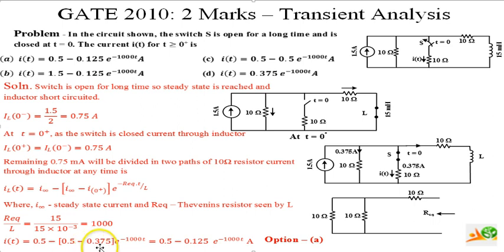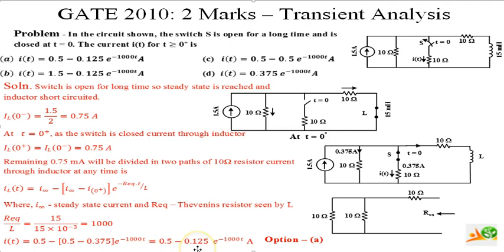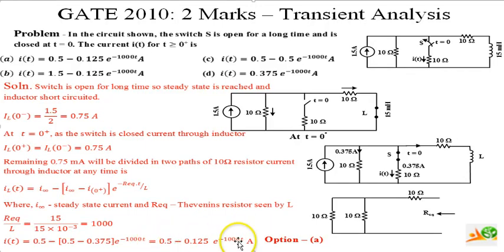The current flowing in the i(t) branch is given by 0.5 minus (0.5 minus 0.375) times e to the power of minus 1000t, which equals 0.5 minus 0.125 times e to the power of minus 1000t. Therefore option A is the right choice for this current.